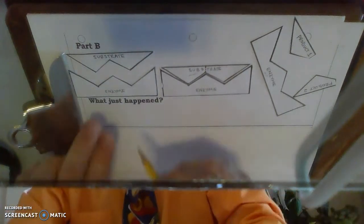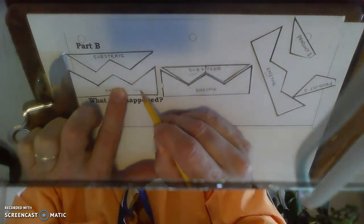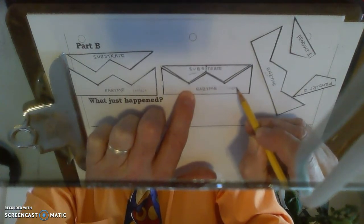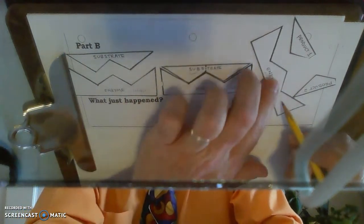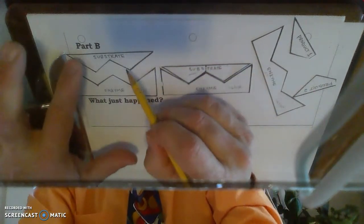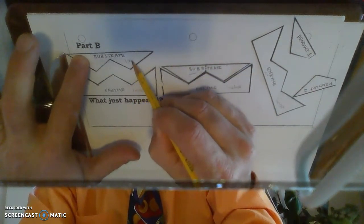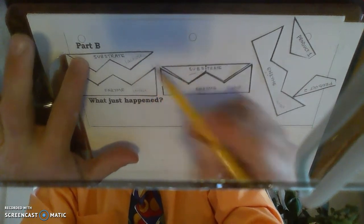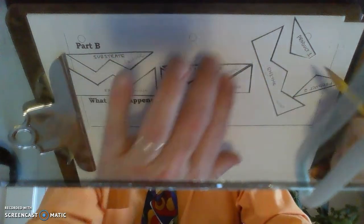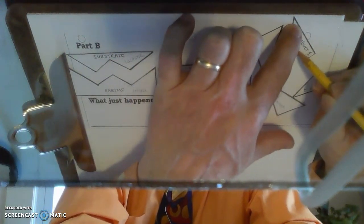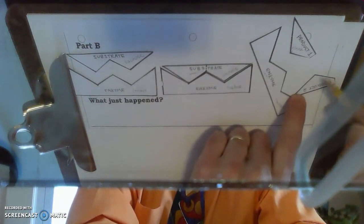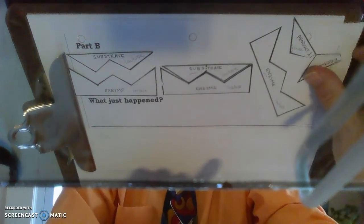So the enzyme is lactase. So wherever there's a lactase enzyme, I'm going to label it lactase. And the substrate is lactose. So wherever there's a substrate, I'm going to put lactose. And product 1 is glucose. And product 2 is galactose. Let's glue down there.